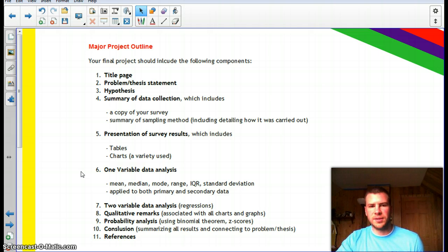There should also be one variable data analysis, two variable data analysis, which is primarily regressions. And then also based on that analysis, you should have some qualitative remarks associated with all your charts and graphs. Probability analysis as well should be included. So you should be using the binomial theorem to generate probability questions and answers as well as normal distribution, using z-scores to calculate certain values.